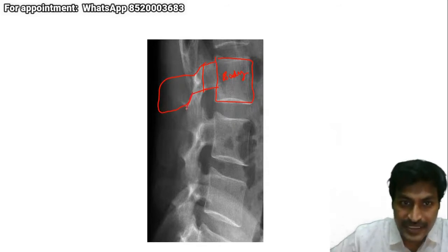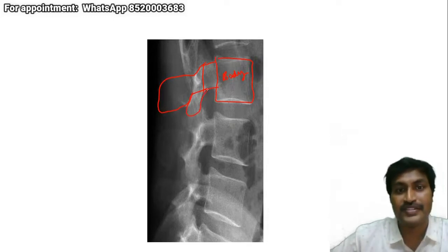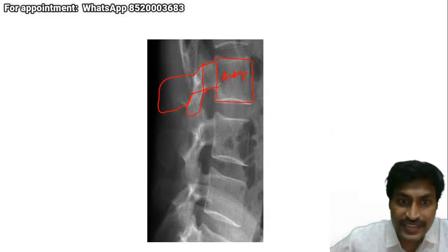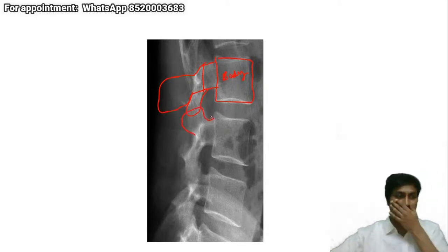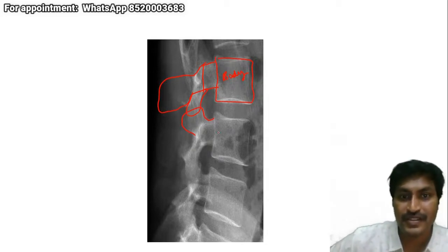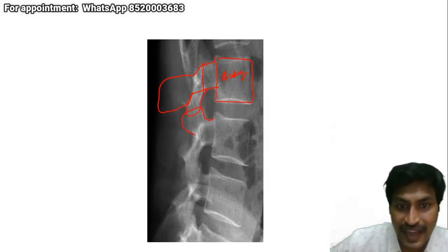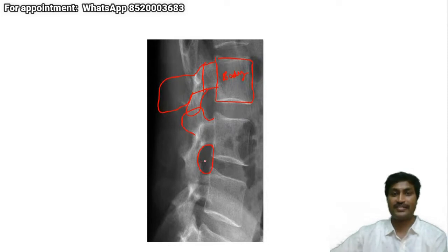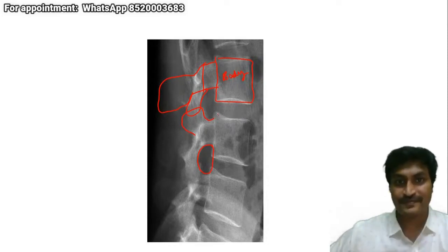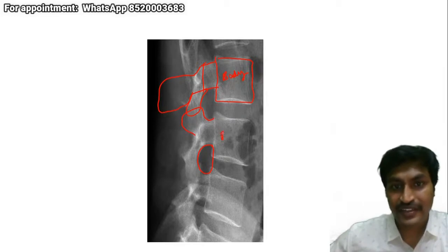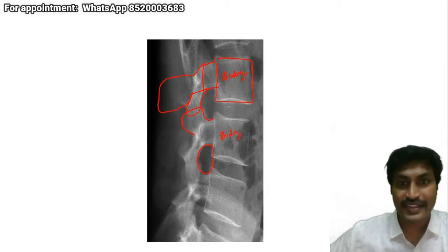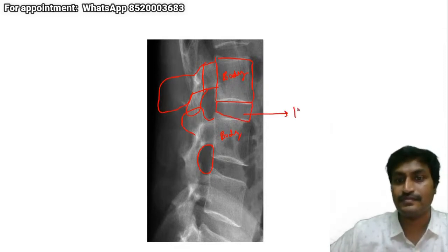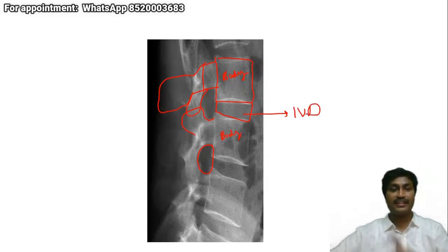So what is coming below? This is the inferior articular process of the upper vertebra. And what is coming above? This is the superior articular process of the lower vertebra. And what are you seeing in between? This is the neural foramina. Between every two vertebral bodies, what are you able to see here? This is the intervertebral disc.